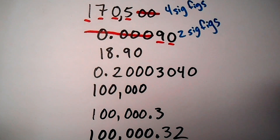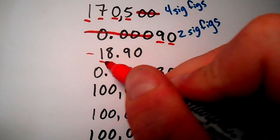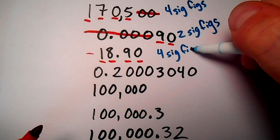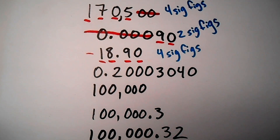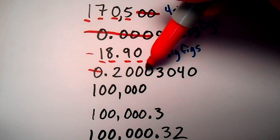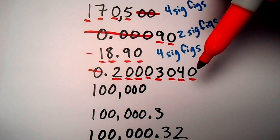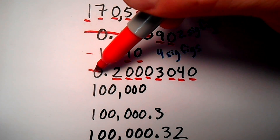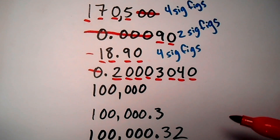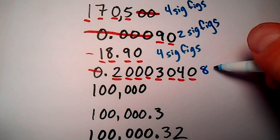The next value has a decimal present, so again we start on the Pacific side, but there's nothing to cross off — all four values are significant, giving us four sig figs. Another one where the decimal is present: the first zero is just a placeholder, but everything else was measured out by a really precise instrument. A common misconception is that students see zeros and think they aren't significant — but it depends on whether they're placeholders or were actually measured out and shown to be zeros. This number has eight sig figs.